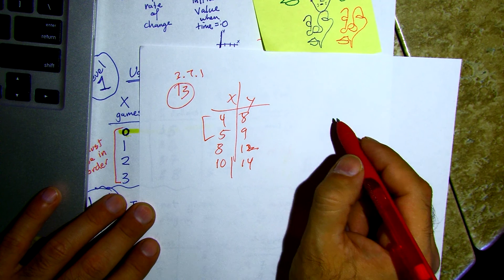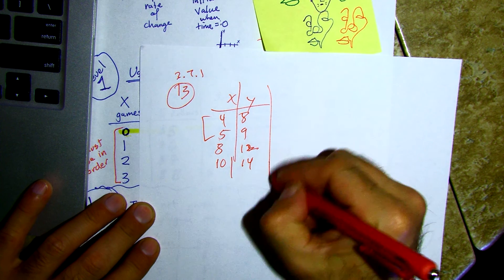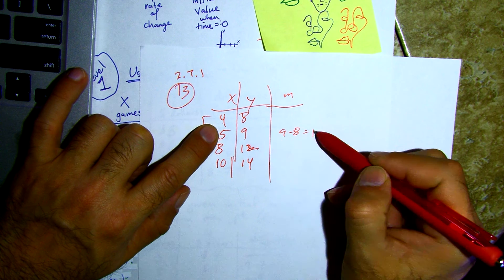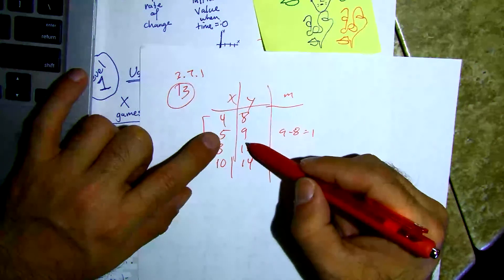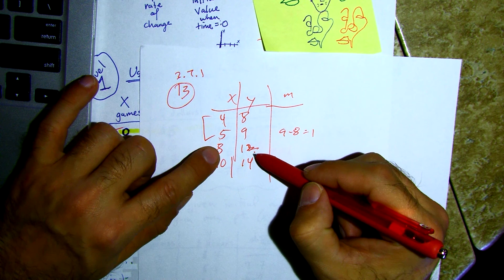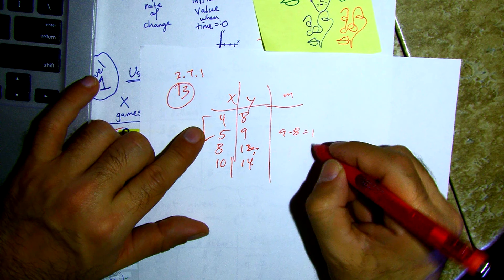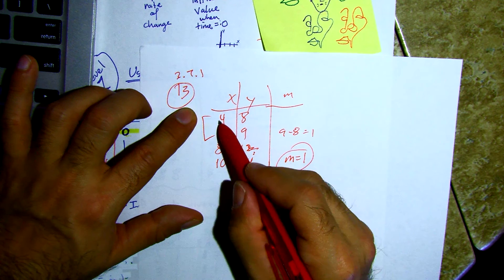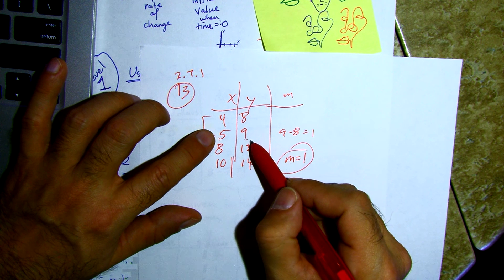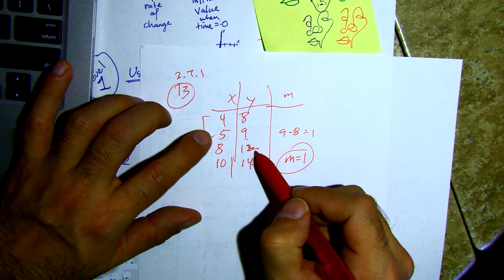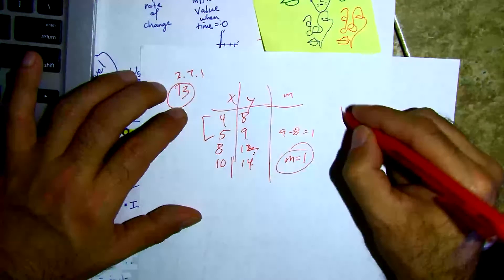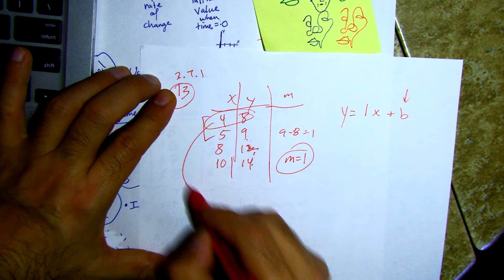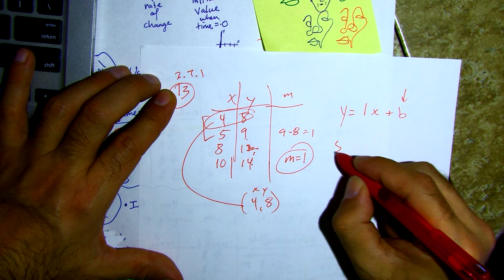Nine minus eight is one. If I'm at five, nine and add one each time: six, ten; seven, eleven; eight, twelve — that works. Nine, thirteen; ten, fourteen — it checks out. So my slope is one. I pick the point four, eight and plug in: eight equals one times four plus b, so b is four.